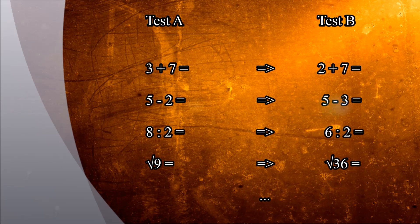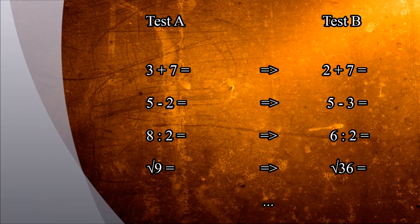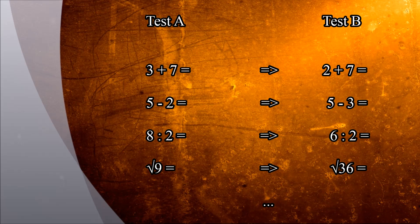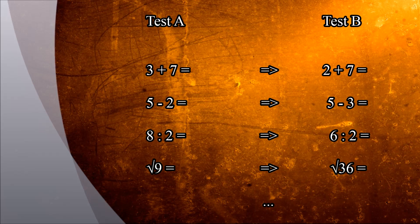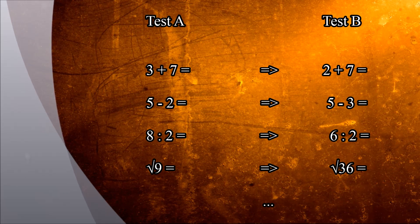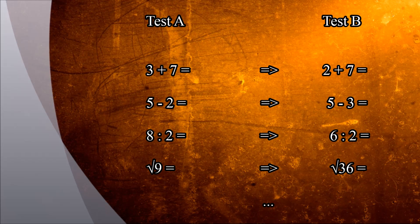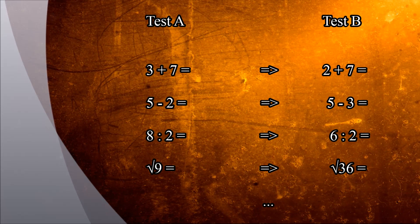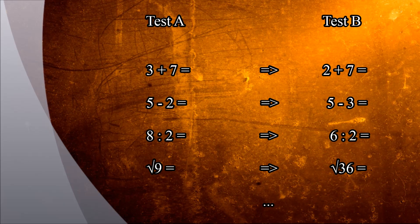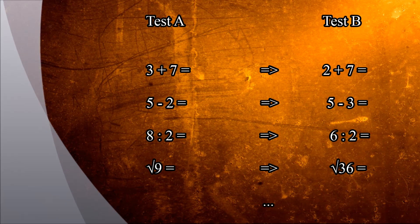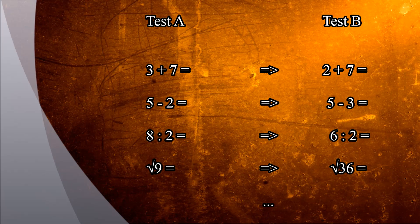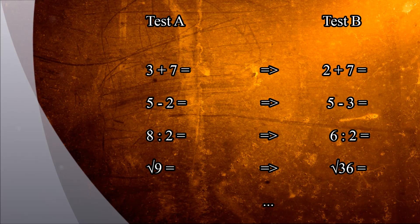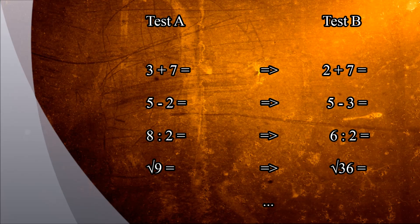The parallel forms method is not that frequently used. In case of ability tests it's usually a little bit easier, because for example in a maths test you just have to exchange a number. Suppose the original item was 'what's the result of 3 plus 7' — the parallel item could be 'what's the result of 2 plus 7'. Participants probably won't have much difficulty solving both items, so there will be a high correlation between solving items from test form A and the parallel form B.